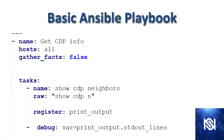Here is a basic playbook example — one that I used earlier in the series when I was taking us through some labs. Underneath the three dashes, where you have the dash space name, that denotes a play. So every play has a name. Also, if we wanted to add a second play to this playbook, we would just put another dash name down underneath the debug line at the bottom.